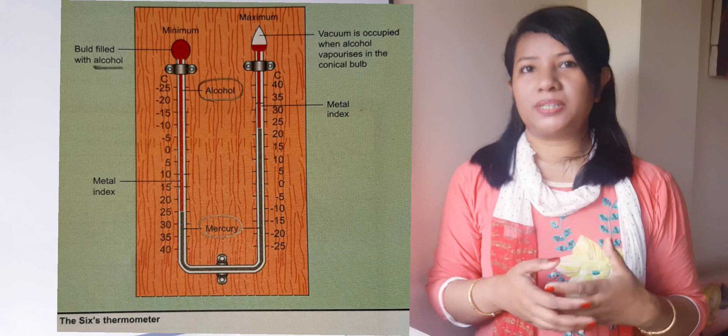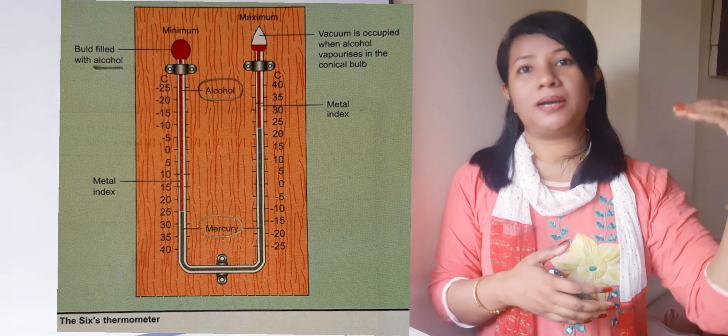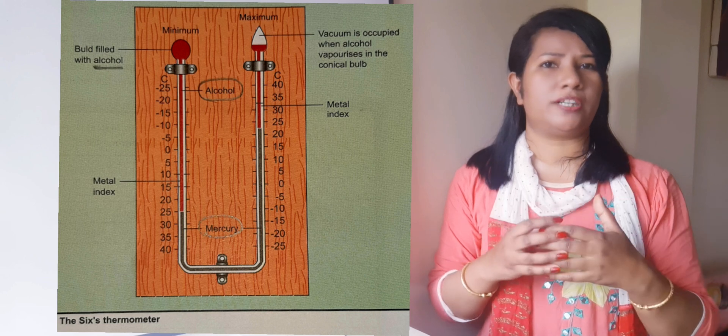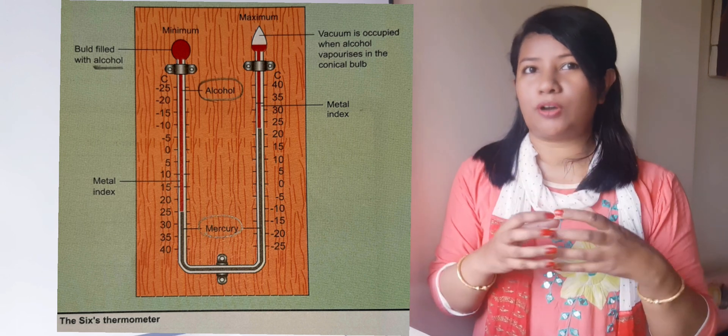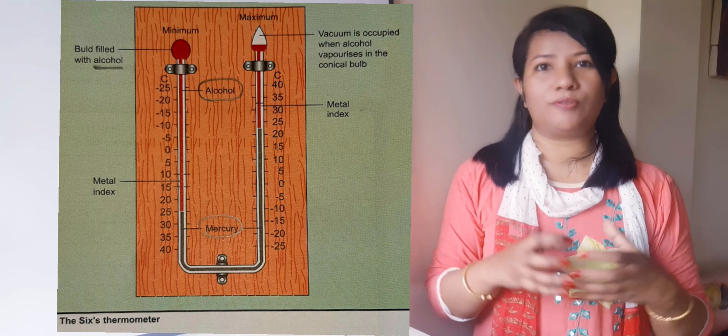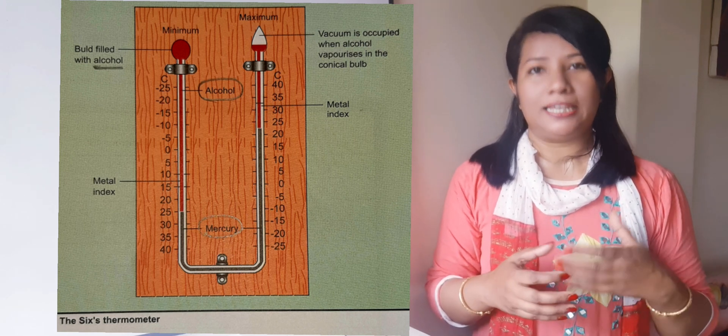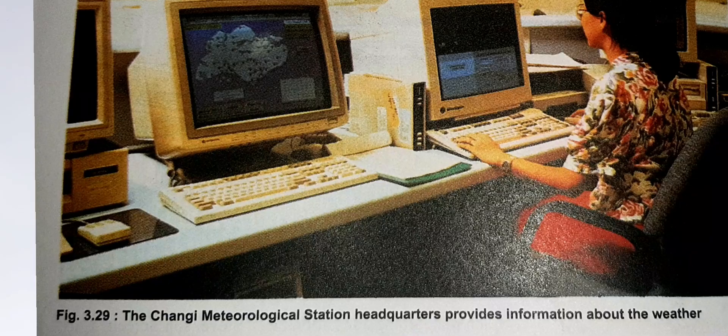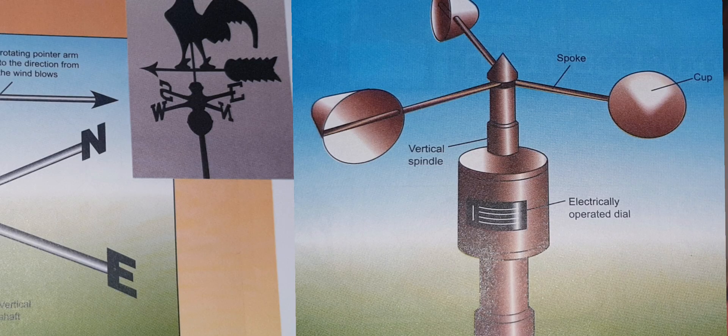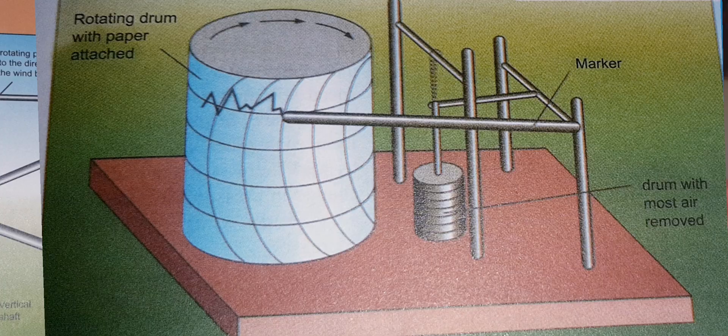This is the common instrument used to measure air temperature: minimum and maximum thermometer. Today weather forecasting involves the use of sophisticated equipment and instruments which are found at meteorological stations. Weather forecasting is the science of predicting the weather.